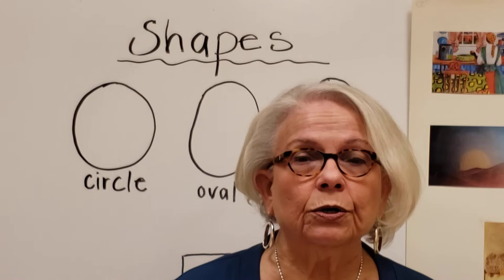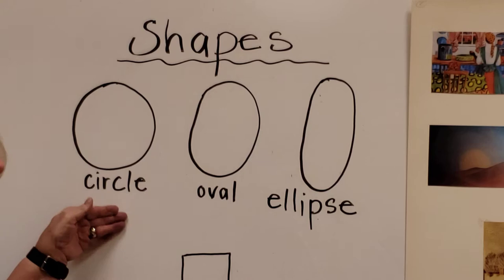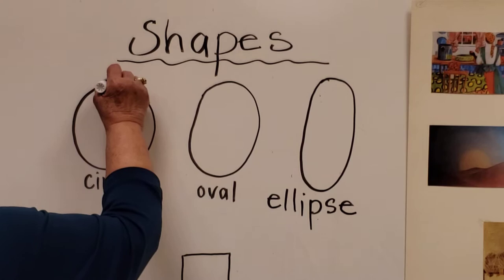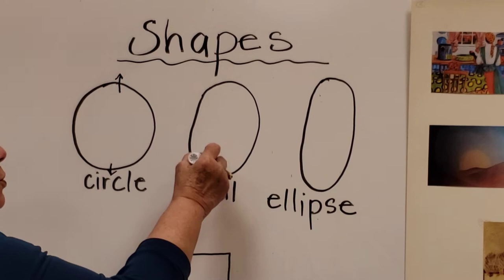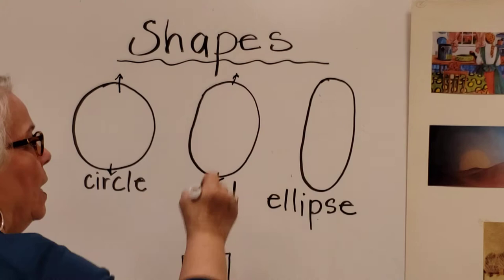The first one that I want to talk about is a circle. A circle is a completely round shape like this. Then if you just stretch that circle out a little bit on the ends, you're going to get an oval shape, just like that. O-V-A-L.